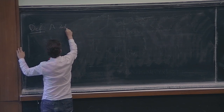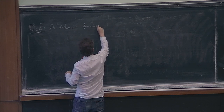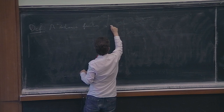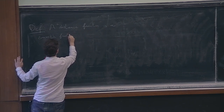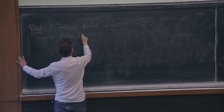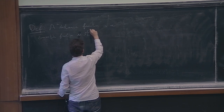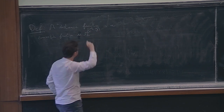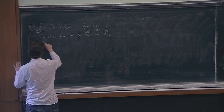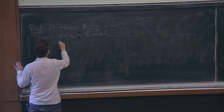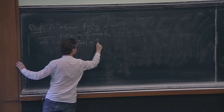A distance function is a smooth function U defined on some open set inside the manifold to ℝ, such that the gradient of U has norm 1.